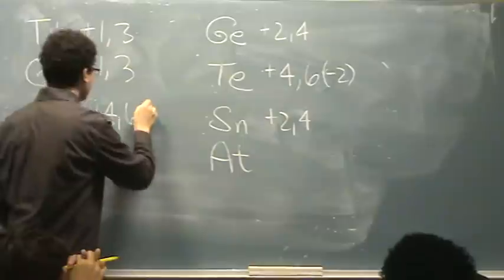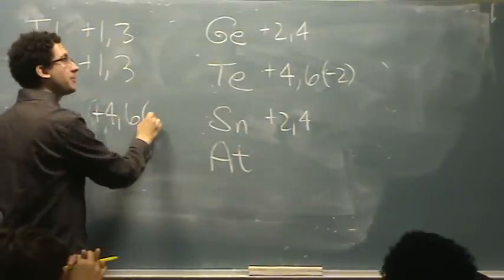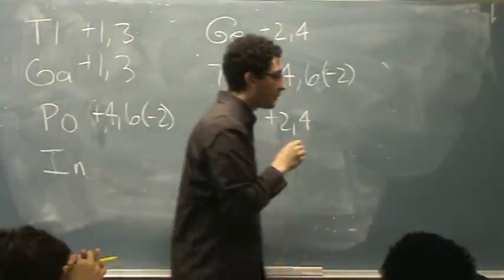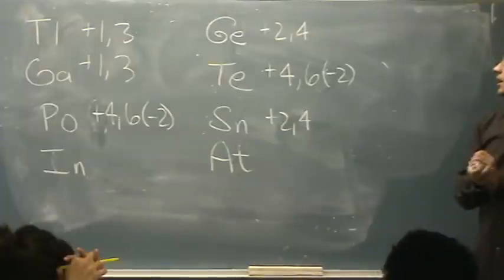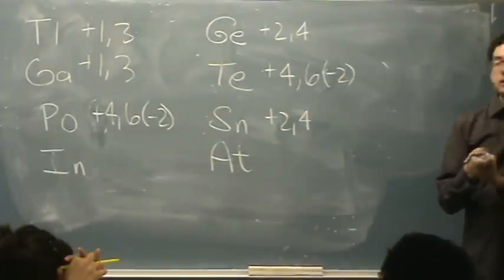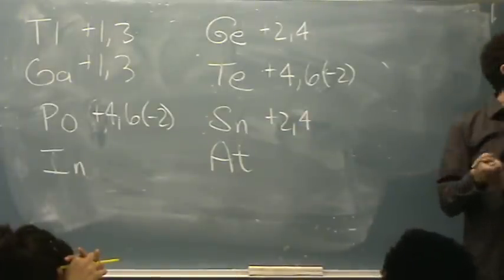Tin is +2 and +4. Oh, polonium, if you're interested in a negative charge, would be -2, because it's a semi-metal. Just like polonium is. Okay, now where are we going? Indium,